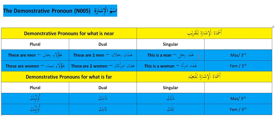'Hadhani rajulani' — these are two men, if you are pointing to or indicating two men. The word 'hadha' is made dual by adding 'ani,' just like we made 'rajul' into 'rajulani.' We make 'hadha' dual as 'hadhani.'